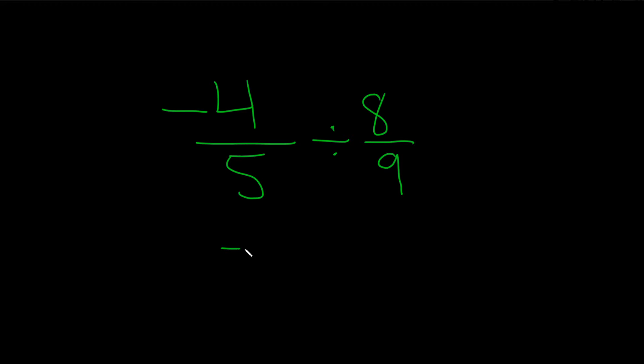You write down the first number again, so negative 4 over 5, you just change it to a times, I'm going to put a dot for times, and then you just flip this number, that's called the reciprocal. So division is the same thing as multiplication by the reciprocal.